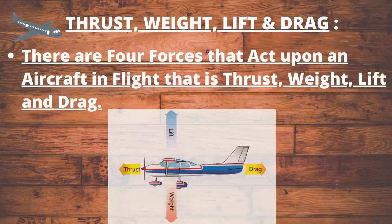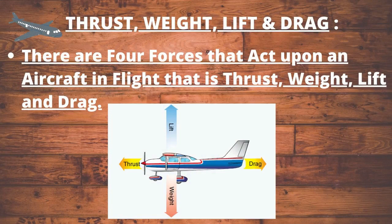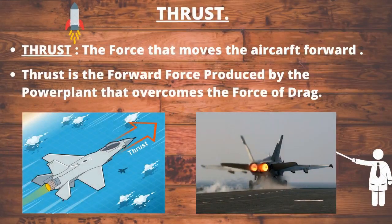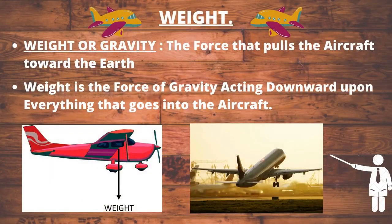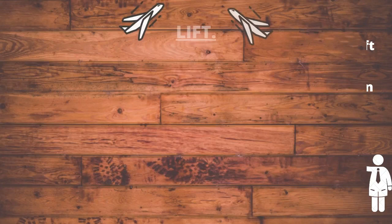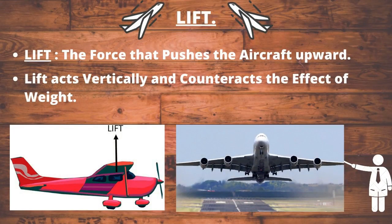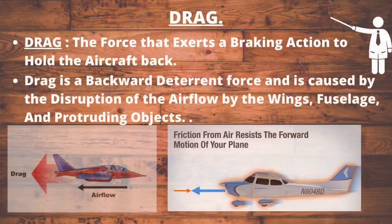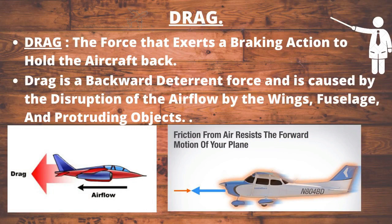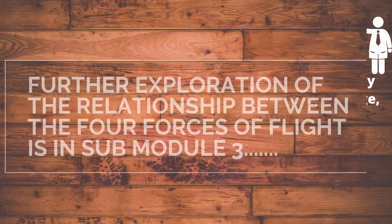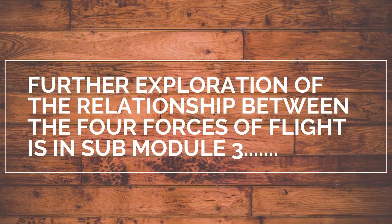Thrust, weight, lift, and drag. There are 4 forces that act upon an aircraft in flight: thrust, weight, lift, and drag. Thrust is the forward force produced by the engine that overcomes the force of drag. Weight is the force of gravity acting downward upon everything that goes into the aircraft. Lift is the force that pushes the aircraft upward. Drag is a backward deterrent force caused by the disruption of airflow by the wings, fuselage, and protruding objects.